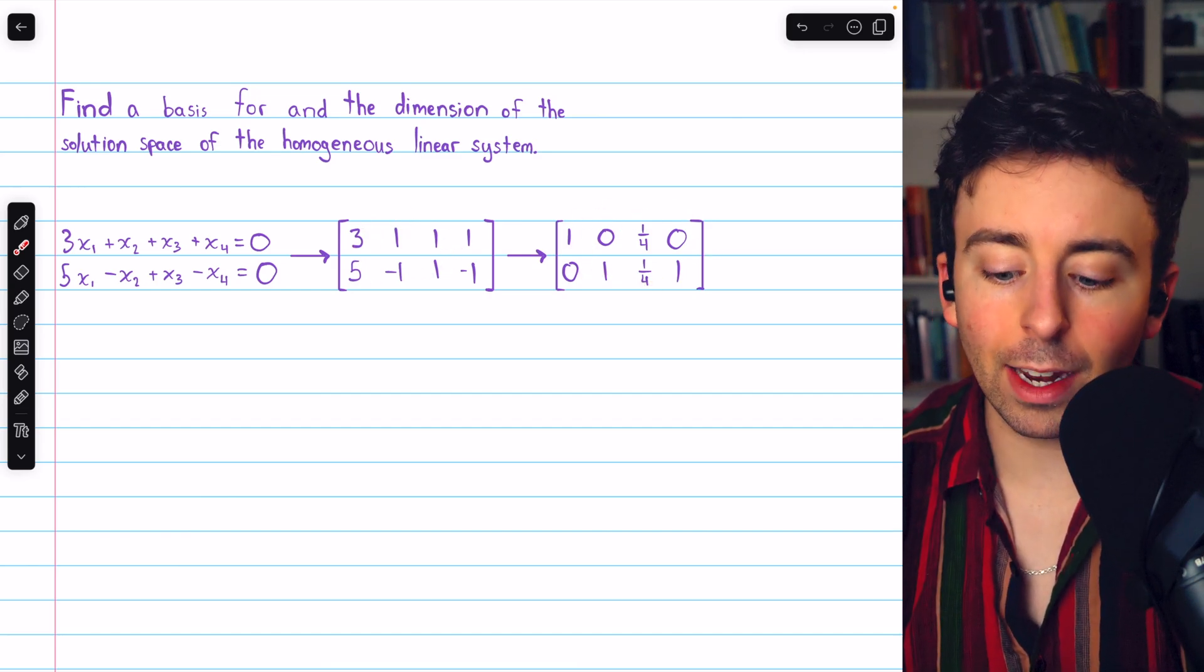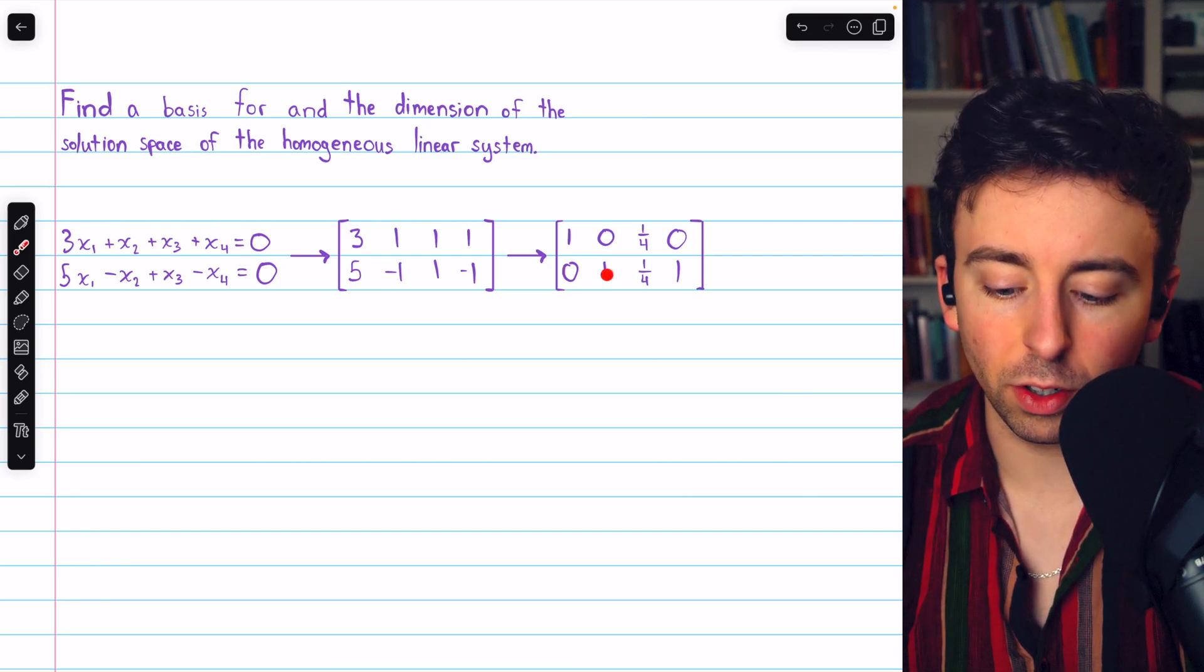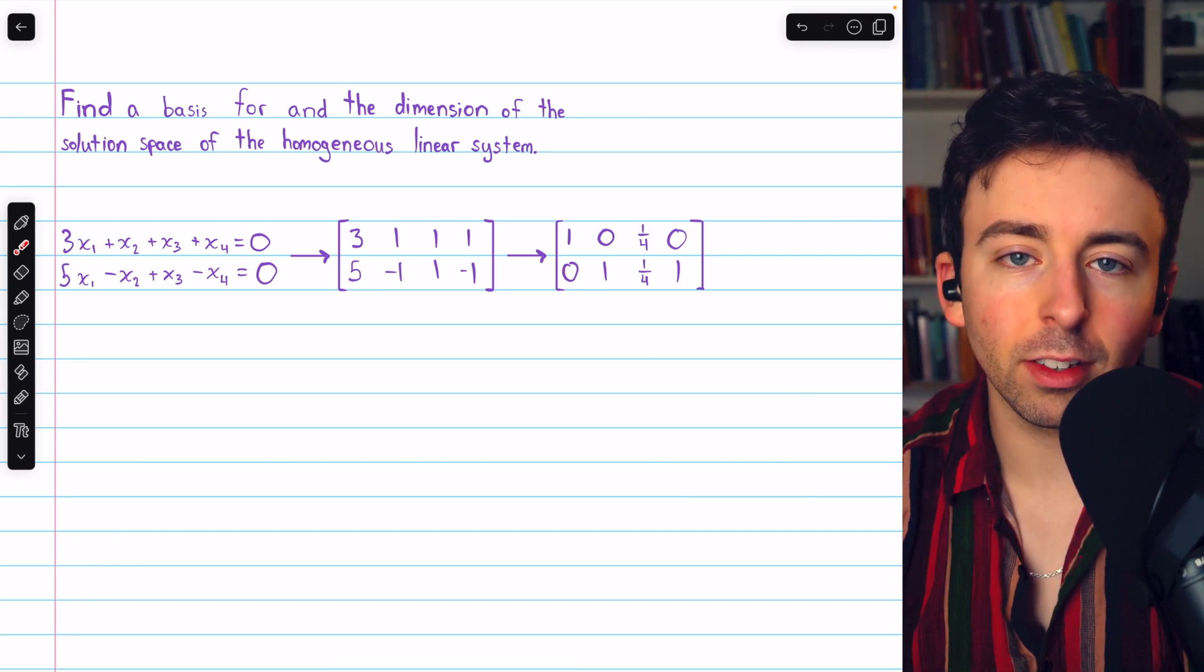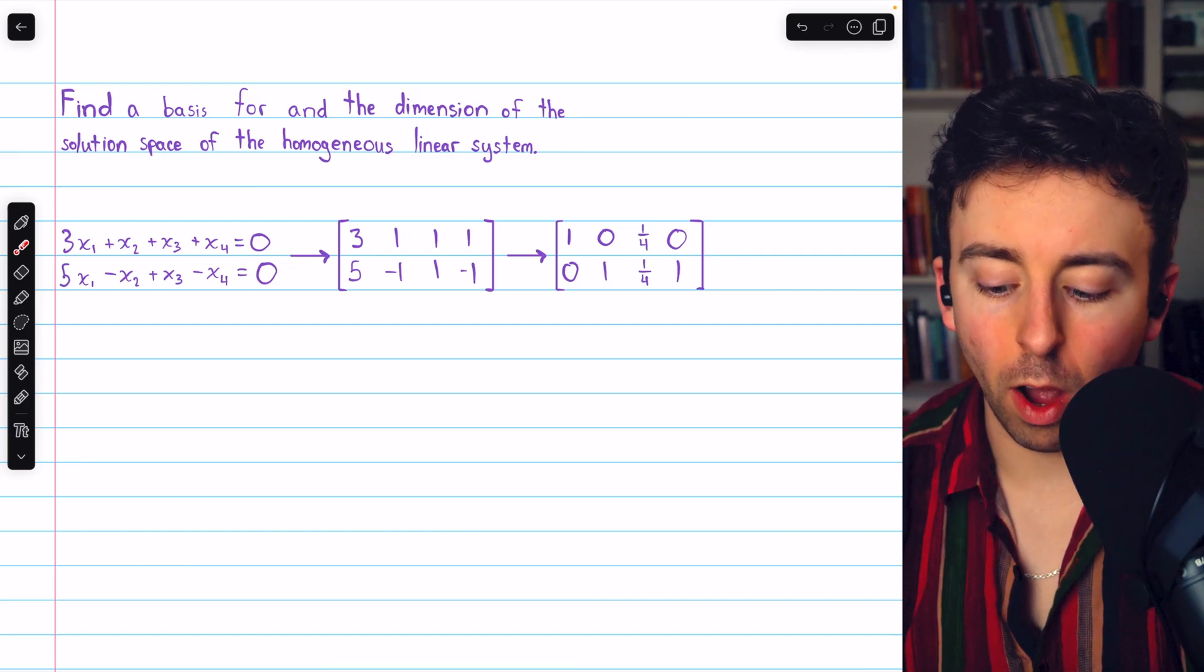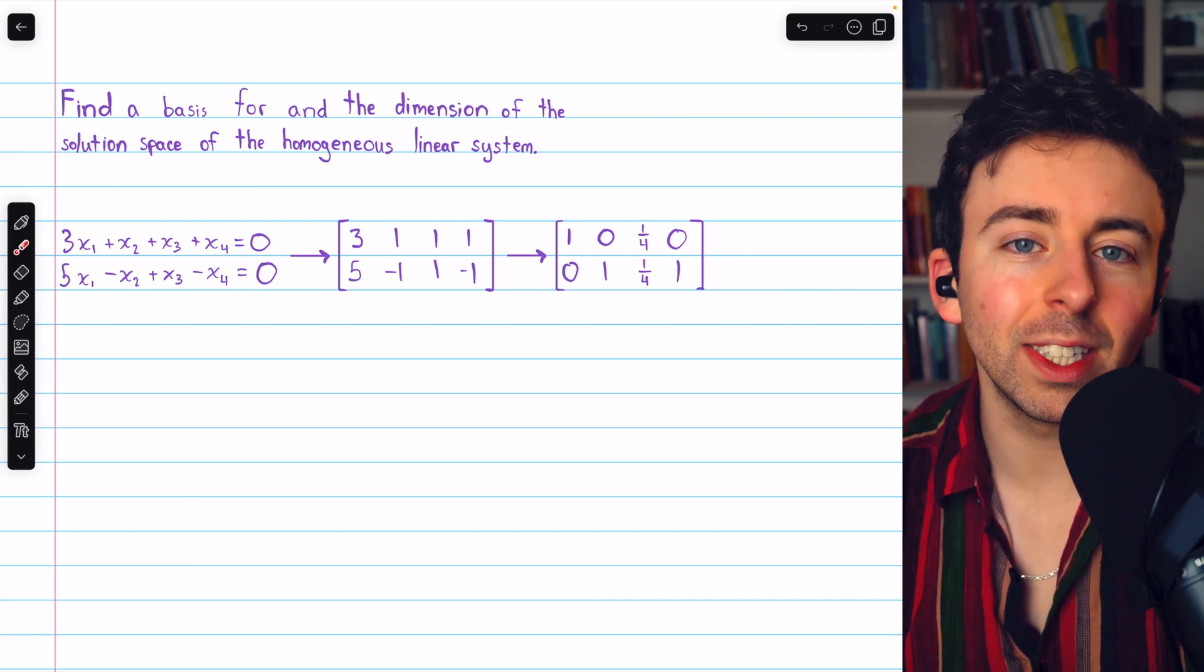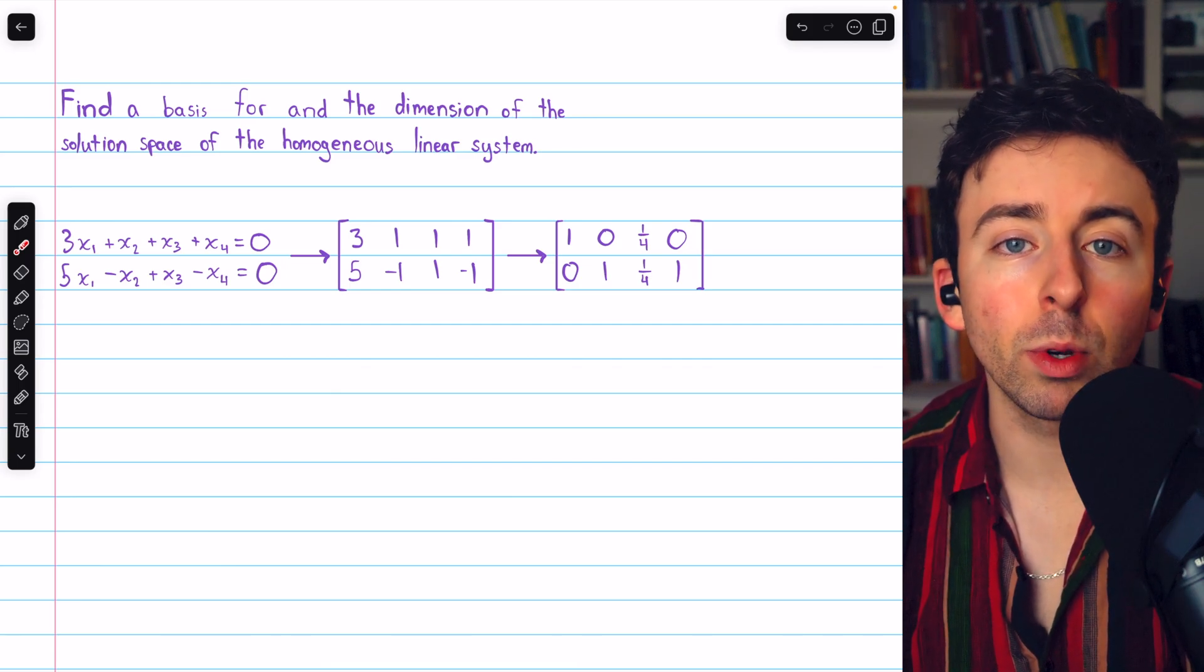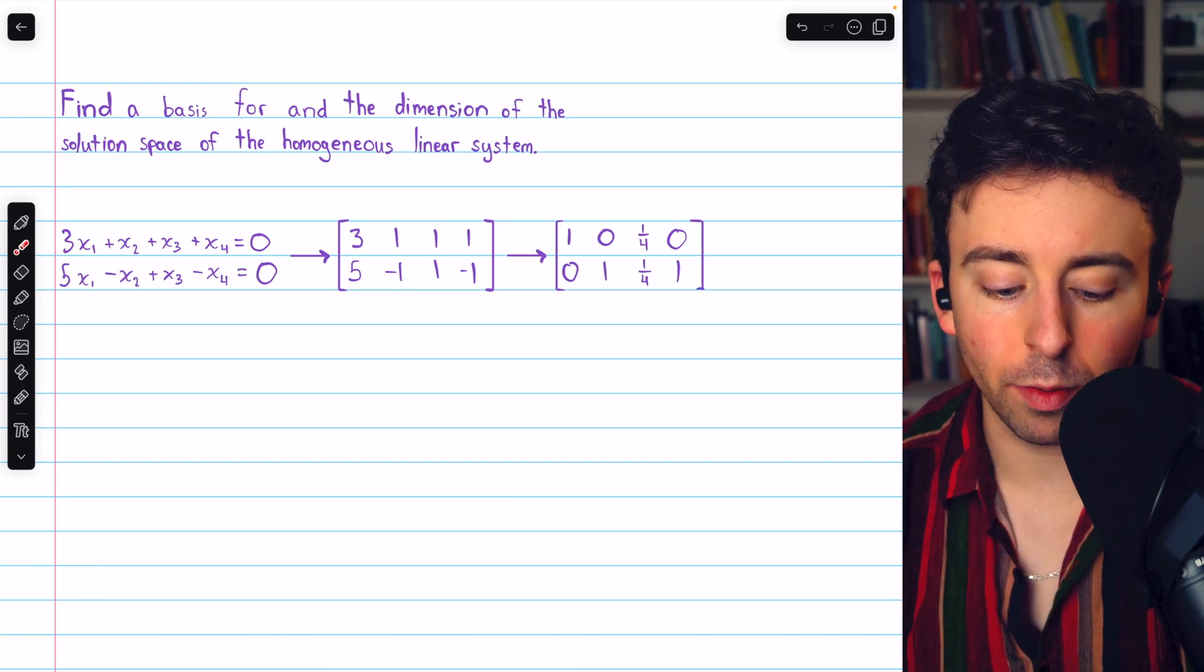You can see that we have leading entries in columns 1 and 2. So, x1 and x2 are our leading variables and will not be free. However, columns 3 and 4 do not have leading entries, and so x3 and x4 will be free variables.